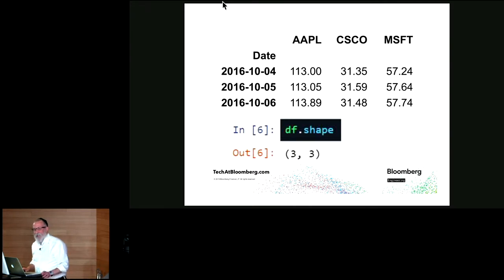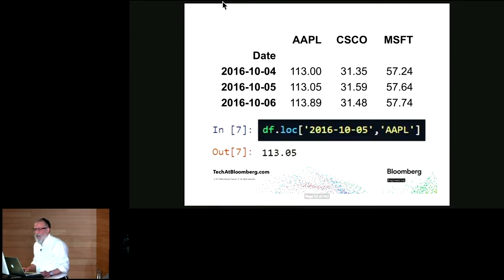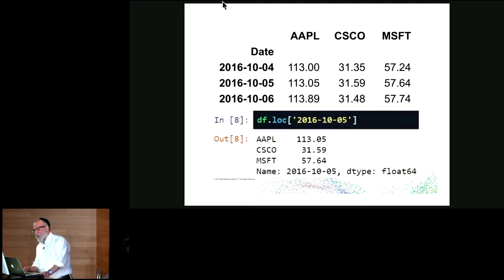So what can we do with the data frame? We can take the shape, see how many rows and columns there are. We can access it by key as we did before, but now since it's two-dimensional, we have two keys. So we can specify the row and the column to get the data back. I can also access just a column by providing just the row key. And notice that what I get back, each column is a series. So when I access the key just for a row, I get back a series. Notice that the index on the series is the same as the column headings, whereas the name on the series is the key that I provided for the row.